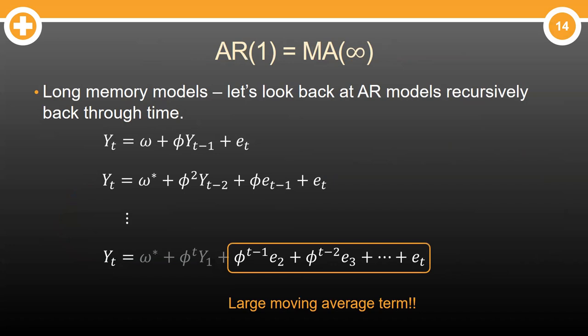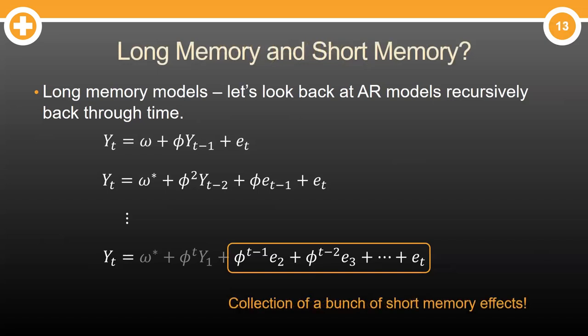Of course, if we don't let time stop, we can see that an AR model is an infinite moving average model. They're essentially opposites of each other. And this makes sense. We're collecting a bunch of short memory effects, the MA terms, together to make our long memory effect, the AR term.